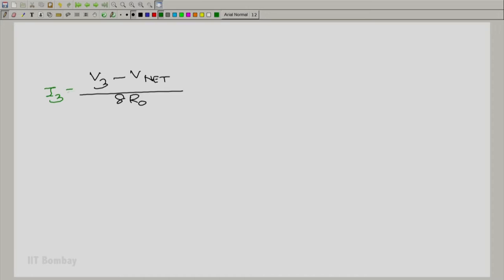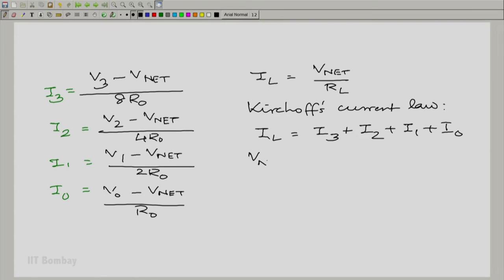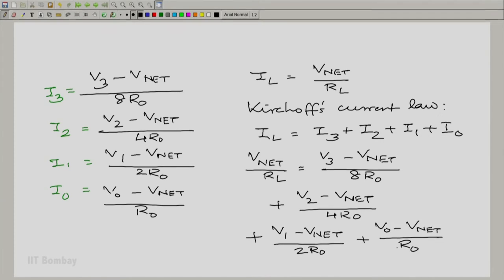Let us write an expression for all of them one after the other. I3 is V3 minus Vnet by 8R0, I2, I1 and I0 and IL is of course Vnet by RL. From Kirchhoff's current law, IL must be the sum of all the others. All the others come in and IL goes out. That leaves us with Vnet by RL equals V3 minus Vnet by 8R0 and so on. All that we need to do now is to rearrange a few terms.